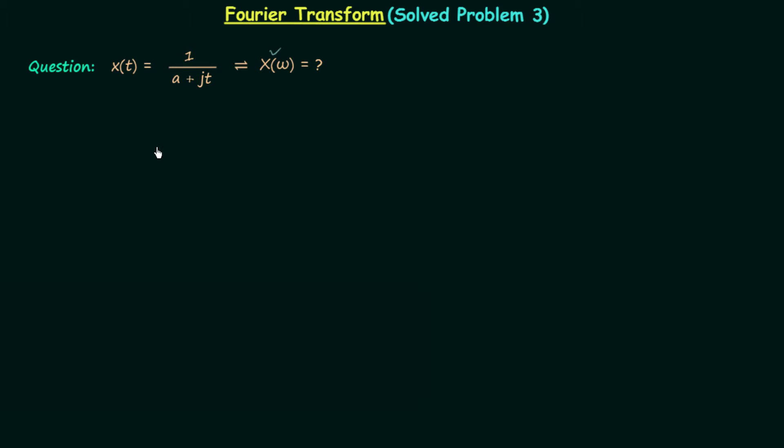If you are following the lectures properly, then you must be knowing some Fourier transform of this form. If you remember, the time domain signal e^(-at)u(t), where a is positive, we calculated its Fourier transform equal to 1 over a plus jω.